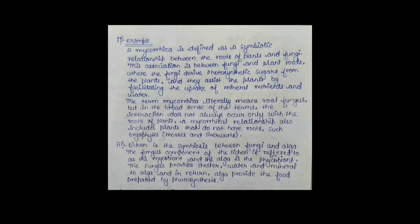तो Mutualism के case में हमने तीन examples देखे। पहला — Bacteria और Human: Bacteria, Human के Intestine में रहकर वो food जो Human digest नहीं कर सकता उसे digest करने में मदद करते हैं, और Human, Bacteria को food provide करता है। दूसरा — Mycorrhiza: Fungi और Plants के बीच association जिसमें Fungi, Plant से Photosynthetic Sugar लेता है और Plant को Mineral Nutrients और Water के Uptake में मदद करता है। तीसरा — Lichens: Fungi और Algae के बीच association — Fungal association को Mycobiont, Algal को Phycobiont बोलेंगे। Fungus, Algae को Shelter, Water, Mineral provide करता है, and in return Algae उसे food देता है। These are examples of Mutualism।